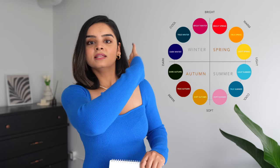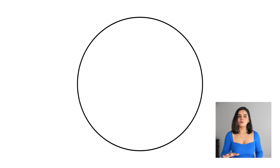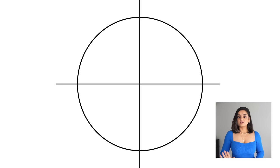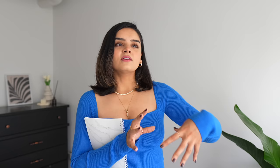Before we talk about different steps, you need to understand a few basics, starting with this color season wheel. Imagine a circle with a horizontal line and a vertical line dividing it into four different parts — four quadrants. Each quadrant represents one season: winter, spring, summer, and autumn. So you have four main seasons, but each is divided into three subseasons. Three times four is twelve, so we have twelve seasons in total.